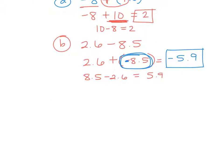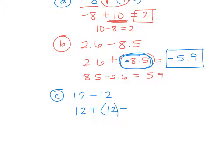Last one of this set of problems. If I give you 12 minus 12, and you were going to rewrite that as an addition problem, what would it look like? 12 plus a negative 12. And when you add opposites, what do we get? Zero. So 12 plus a negative 12 is zero.